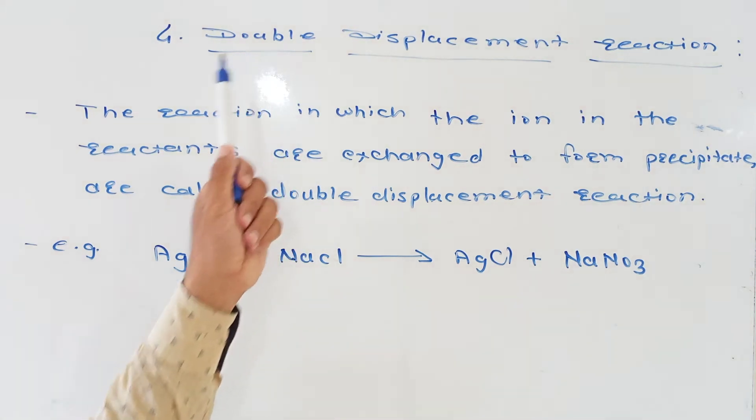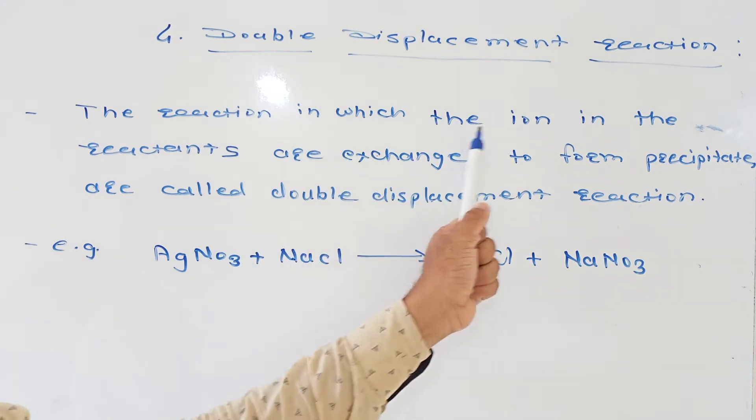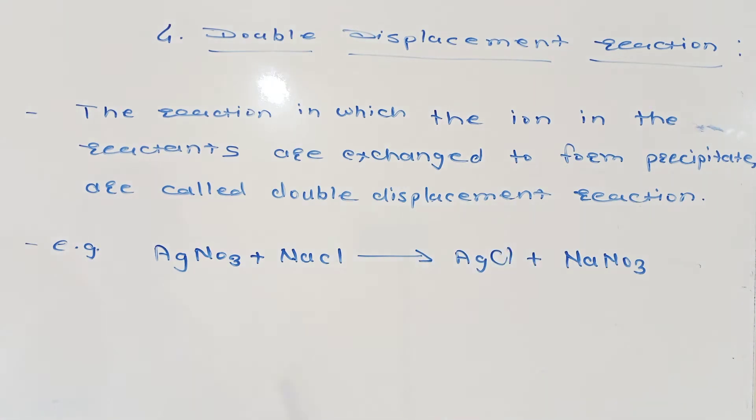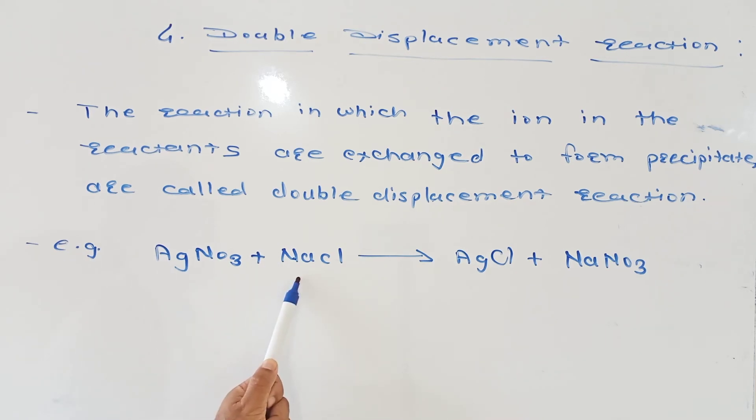The reaction in which the ions in the reactants are exchanged to form precipitate are called double displacement reaction.